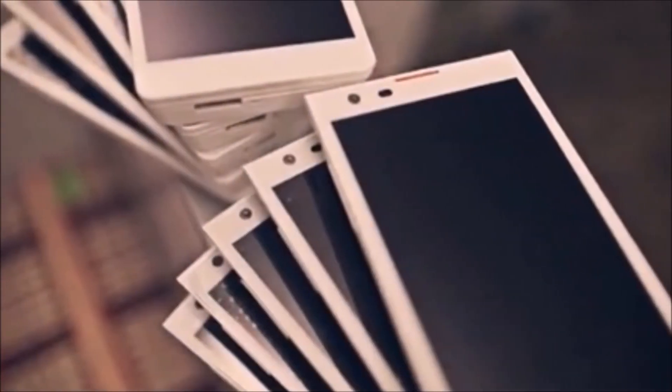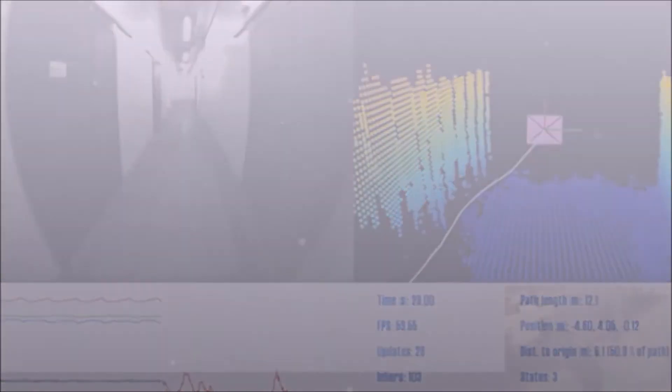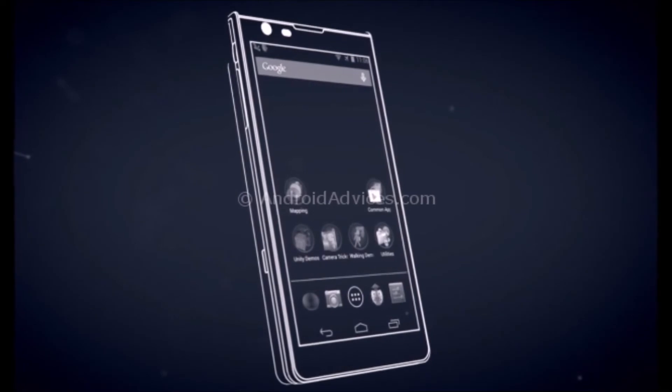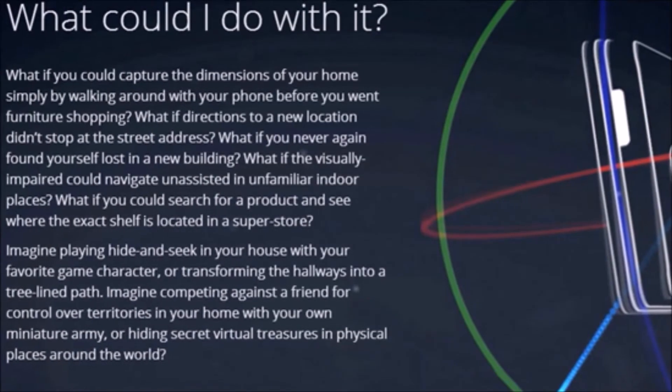All this gets jammed into a 5 inch prototype smartphone that Google hopes to send out to a couple hundred developers to play around with. The Project Tango phone allows for 3D mapping of the environment around it, theoretically making it possible for Google to go beyond just providing a view from the streets of the world to rendering all surfaces in the world.